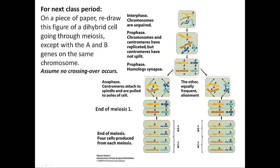What I'm going to have you guys work through before class is on a piece of paper, I'd like you to redraw this figure of meiosis in a dihybrid cell going through meiosis, except that the A and the B genes are on the same chromosome. In this particular example, we're going to just assume that there is no crossing over because that makes it a lot more complicated.